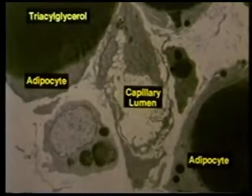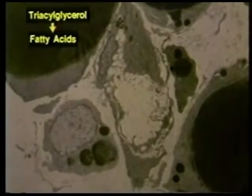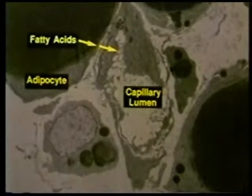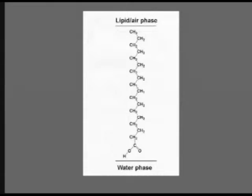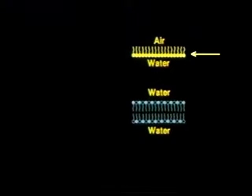When fat is mobilized, triacylglycerol in adipocytes is hydrolyzed by lipase to fatty acids, which are transferred to the capillary lumen for transport by plasma albumin to other tissues in the body. Oleic acid is representative of the long-chain fatty acids used by the body for energy and for synthesis of membrane lipids. Long-chain fatty acids are amphiphilic. When present in a lipid monolayer on the surface of aqueous medium, they orient themselves with the polar head group in contact with water and the hydrocarbon tail in contact with air. A lipid monolayer is equivalent to a single leaflet of a lipid bilayer.